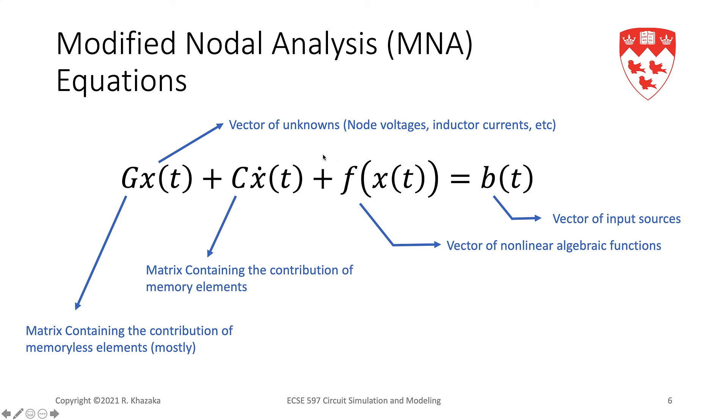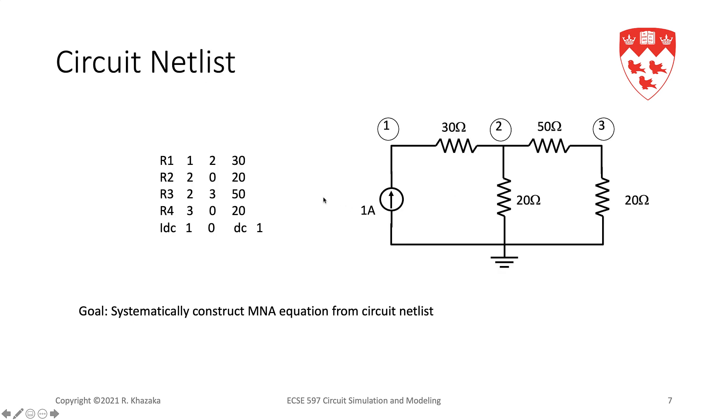What we will be doing in the first portion of this course is developing systematic techniques for constructing these equations. The idea is we're going to start with a netlist which describes the circuit. This netlist contains a list of elements, which nodes they're connected to, and whatever parameters they have. We want to start with a netlist and systematically construct the MNA equations. This is the goal of the first few lectures in this course.